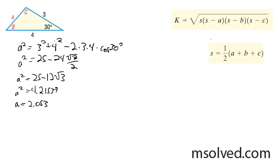Okay so now we can find our s value. That's going to be s equal to 1 half times 2.053 plus 3 plus 4. This gives me 4.52657 roughly.